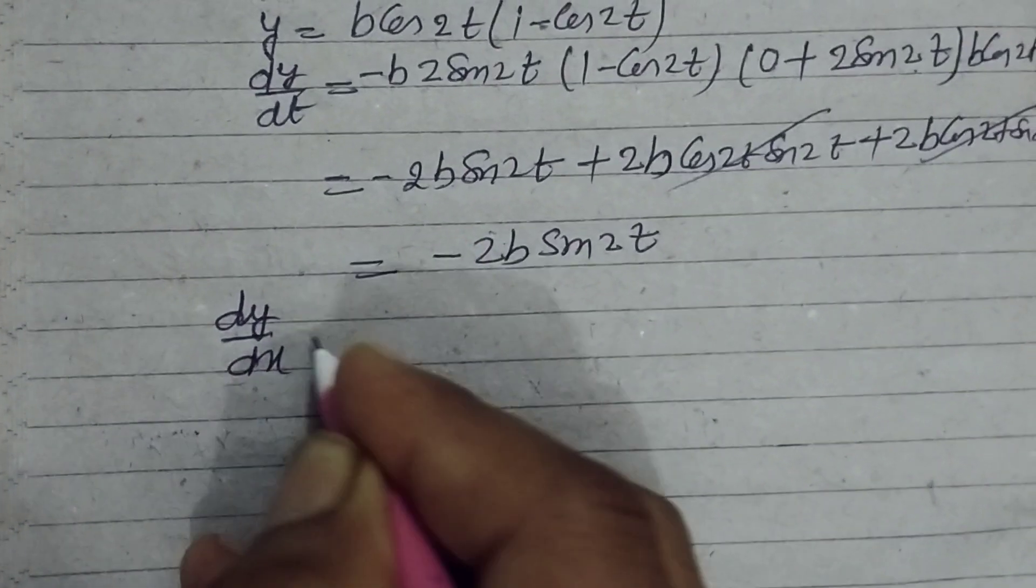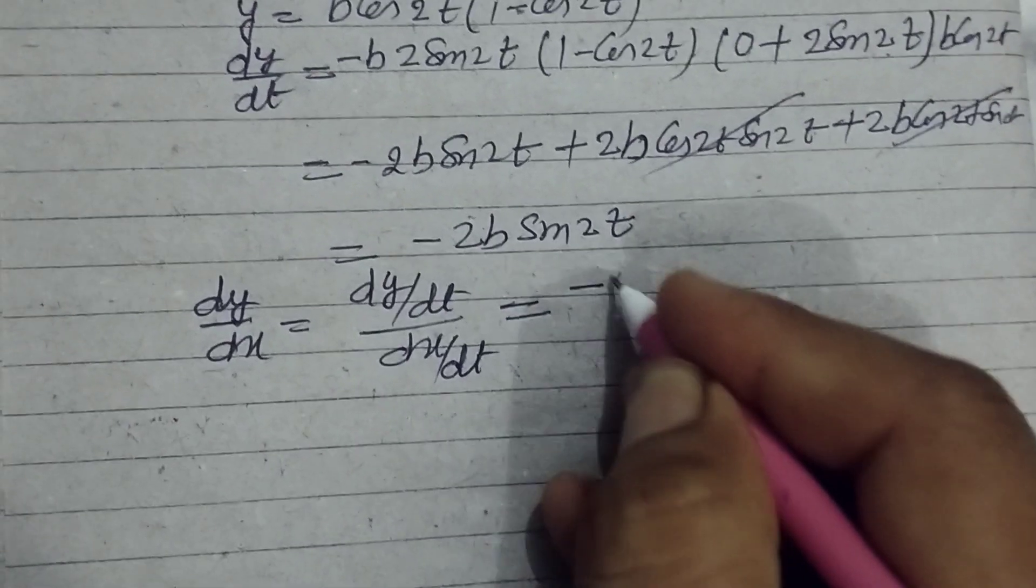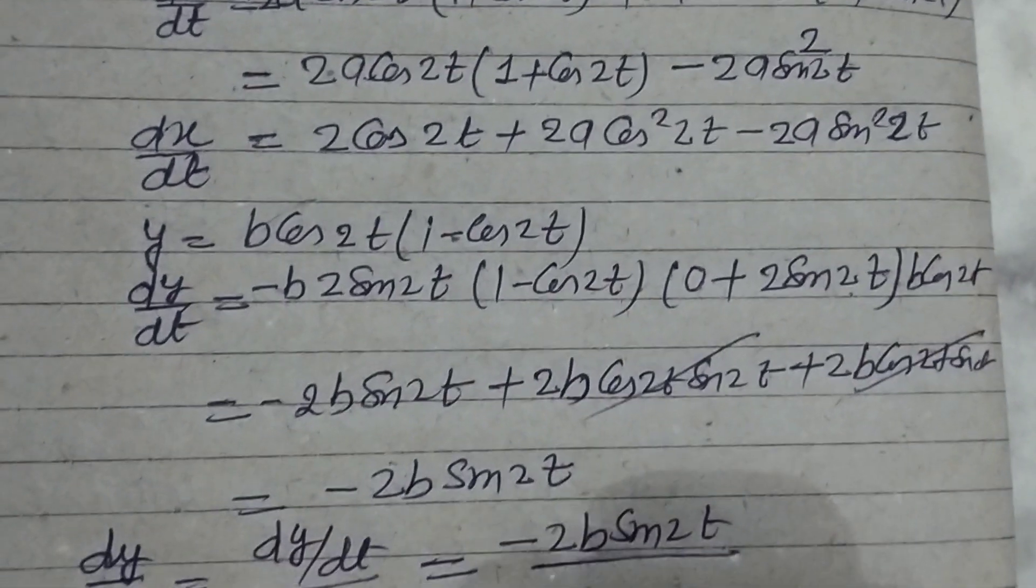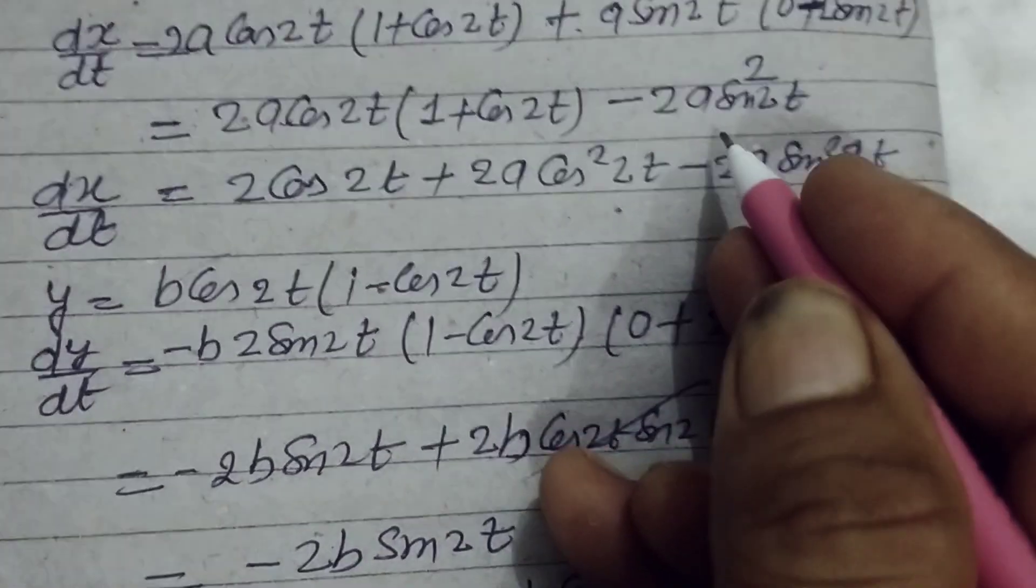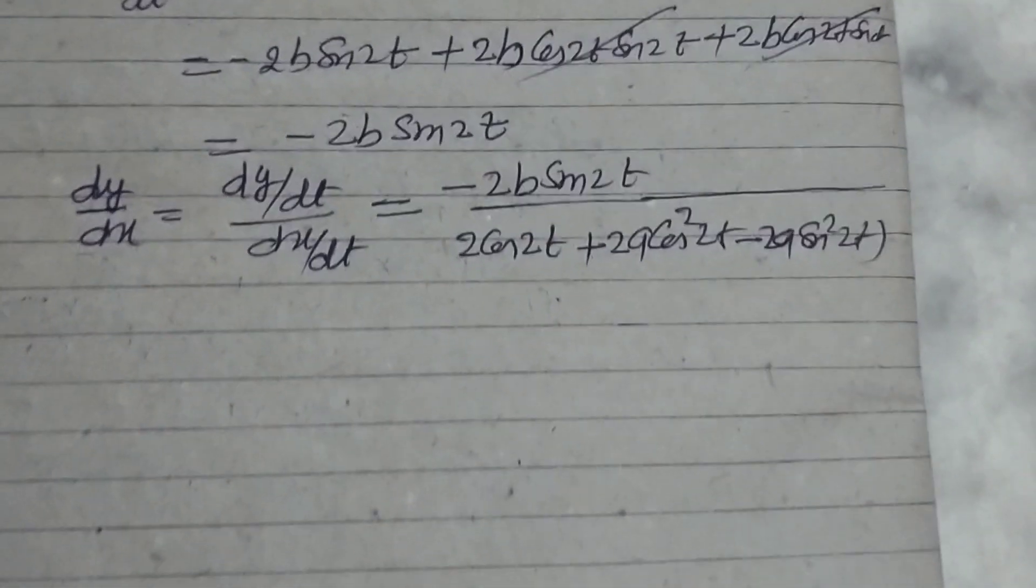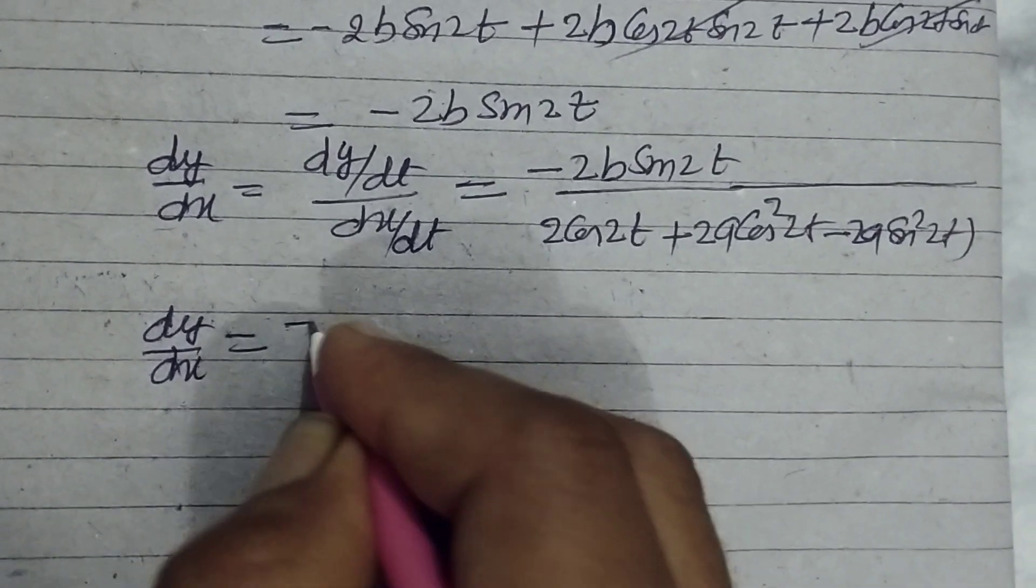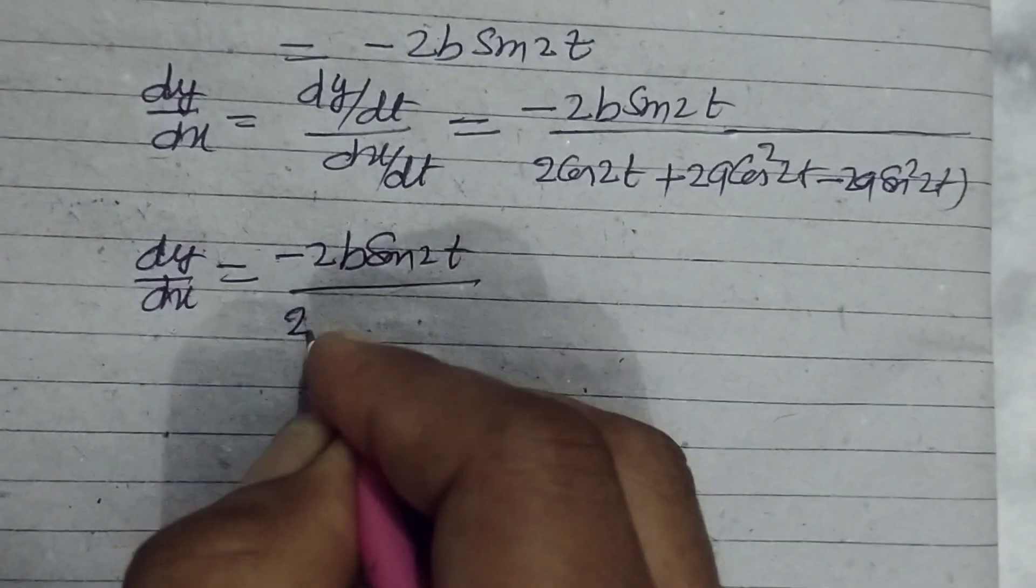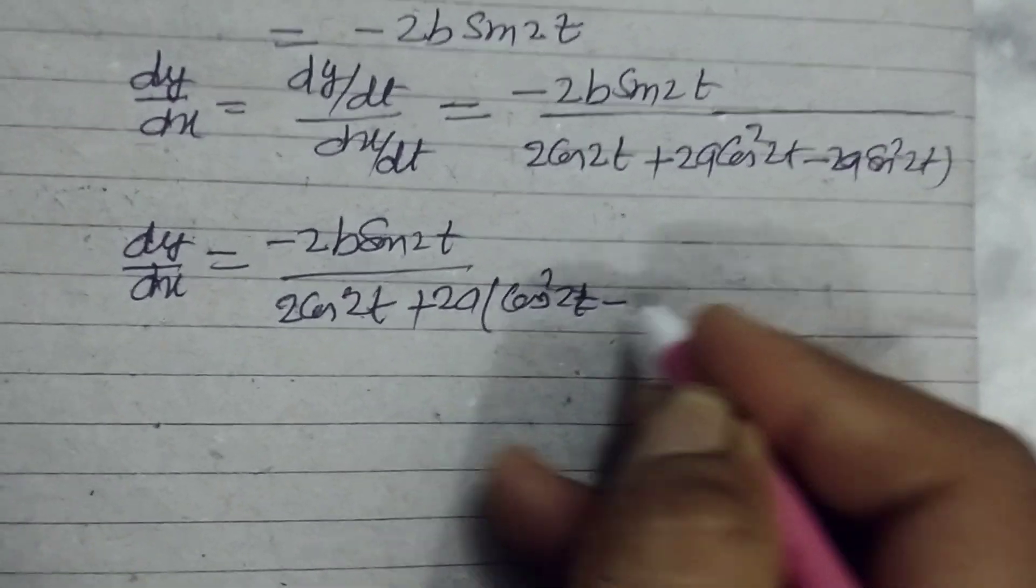Now dy/dx equals dy/dt over dx/dt, so this is -2b sin 2t over (2a cos 2t + 2a cos²2t - 2a sin²2t). Factoring out 2a: dy/dx = -2b sin 2t over 2a(cos 2t + cos²2t - sin²2t).